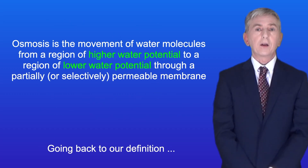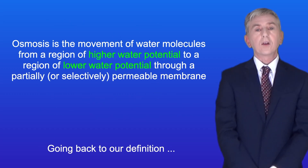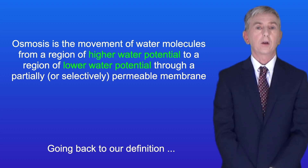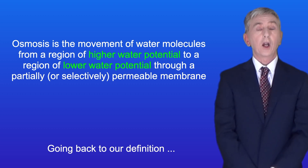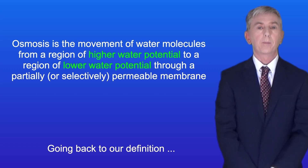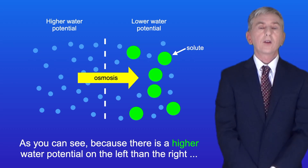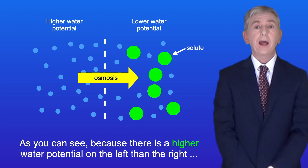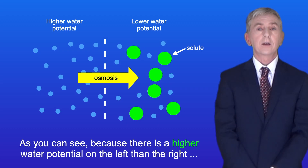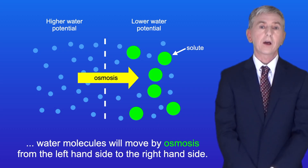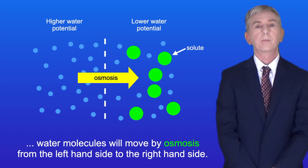Going back to our definition, we can see that osmosis is the movement of water molecules from a region of higher water potential to a region of lower water potential through a partially permeable membrane. So as you can see, because there's a higher water potential on the left than the right, water molecules will move by osmosis from the left-hand side to the right-hand side.